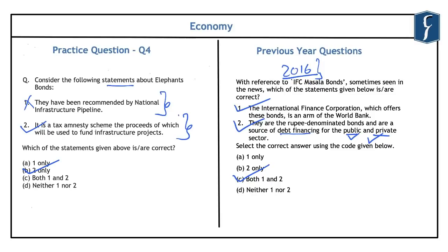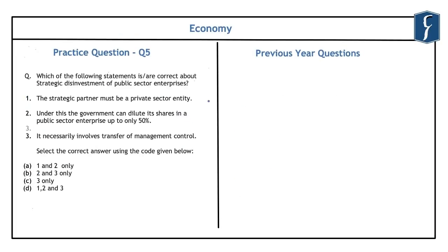The 2016 question related to an initiative aimed at financing industry in India, and similarly the elephant bonds question is related to financing infrastructure projects. The fifth question is related to disinvestment, specifically the strategic disinvestment of public sector enterprises. The government of India has recently decided on strategic sale, including the strategic sale of Bharat Petroleum Corporation Limited.